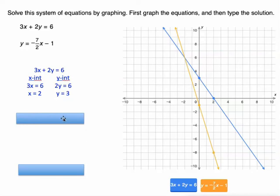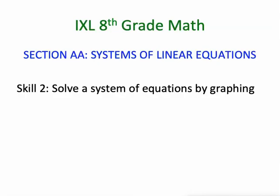So where do they cross? They cross at negative 2, 6. So that's my four examples. Again, this goes with section AA skill 2 in IXL's 8th grade math. Good luck.